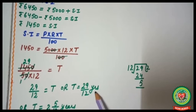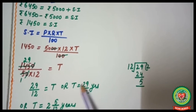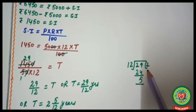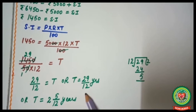29 and 12 cannot be simplified further, so time = 29/12 years. Dividing 29 by 12, we get time = 2 and 5/12 years. That is the answer for the time in this example.